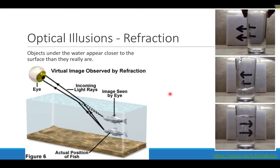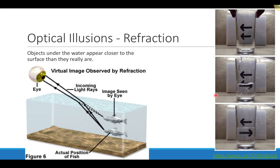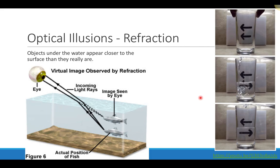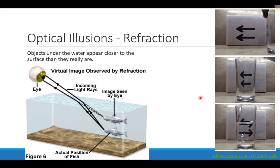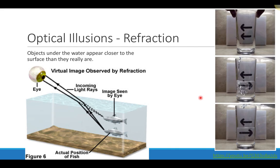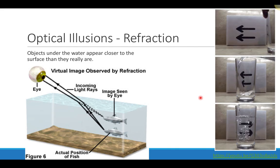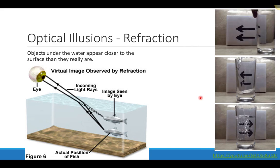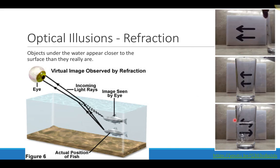Another optical illusion: you can see that the direction of arrows appears to change because of water added to a glass. This is related to something called a lens, which we'll talk about later, but it's another example of refraction causing an optical illusion.